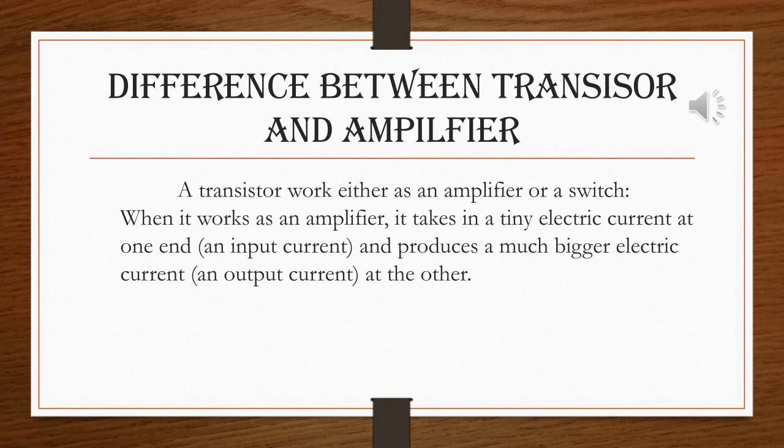What is the difference between a transistor and an amplifier? A transistor works either as an amplifier or a switch. When it works as an amplifier, it takes in a tiny electric current at one end as an input current and produces a much bigger electric current as an output current at the other end.